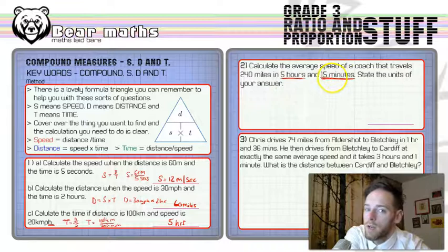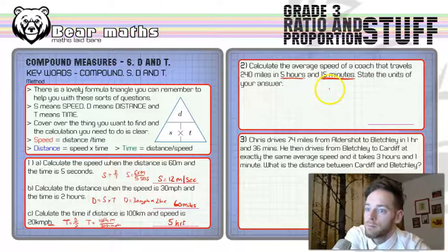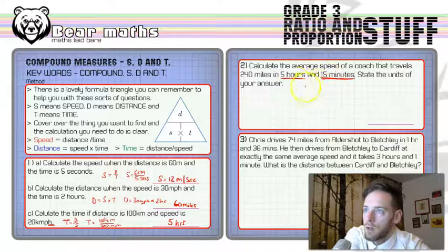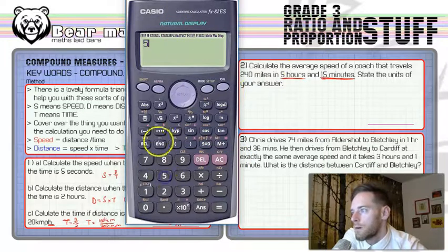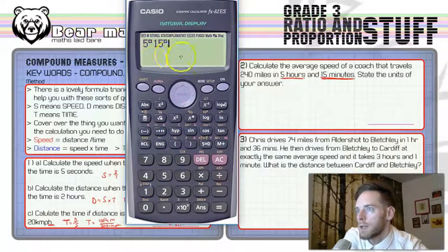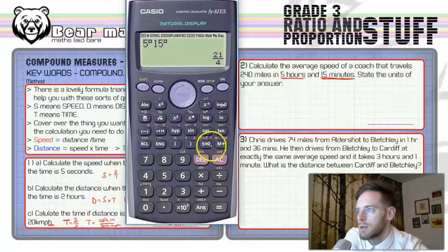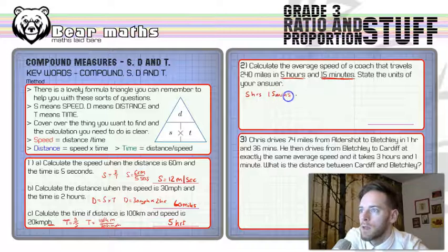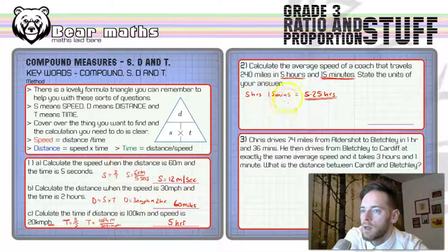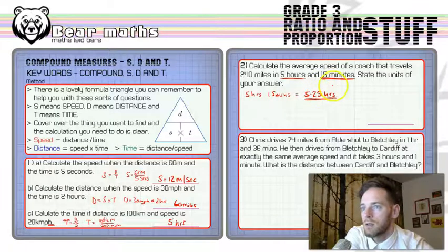Let's think about converting that first. 15 minutes is how much of an hour? It's a quarter of an hour. Remember, 60 minutes in every hour, so 15 out of 60 is 0.25. That's 5.25 on the calculator. What's easiest is you enter 5 hours and 15 minutes on the calculator, press equals, then press S to D, and it tells you how many hours: 5.25. So 5 hours and 15 minutes equals 5.25 hours. We've got it in one unit now - we don't want mixed units for calculations.